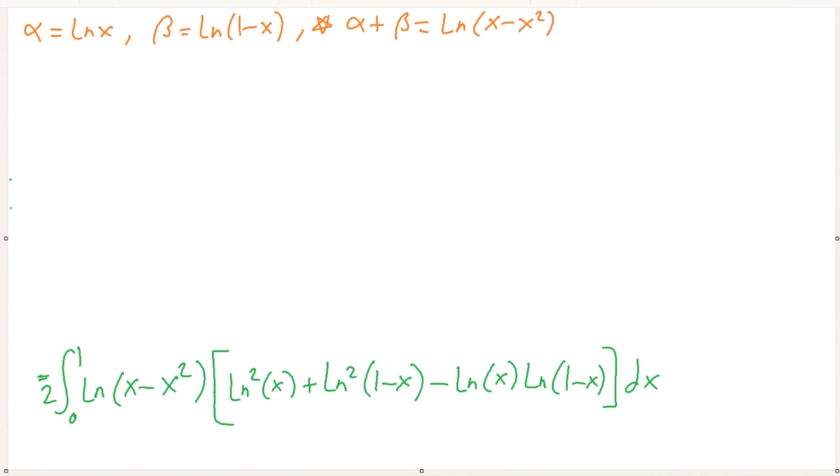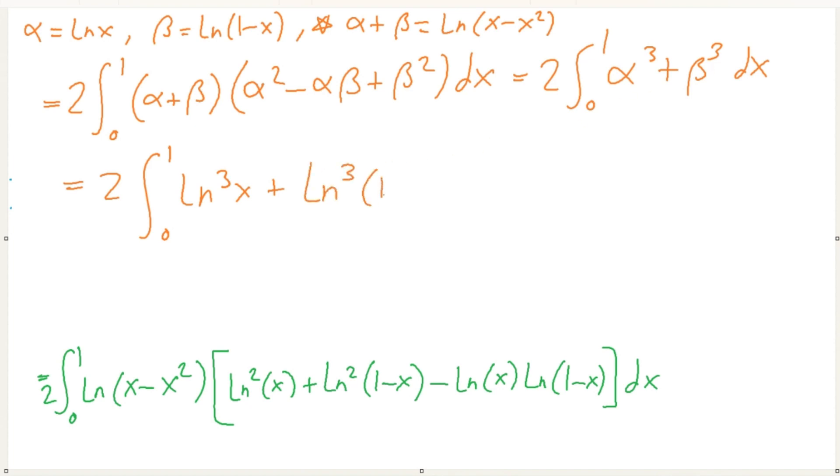Okay. Oh wait a second, wait a second. Huh. Isn't that what we have? Right? This is alpha plus beta. And this here is alpha square minus alpha beta plus beta square. Oh, we should look at that. What is this? This is equal to alpha cube plus beta cube. Oh my god, look at that. And then now we have, so now, in general, we have ln cube plus ln cube of 1 minus x dx.